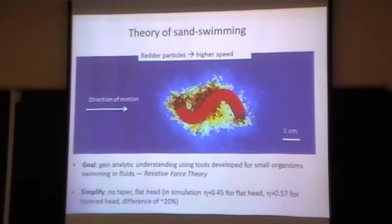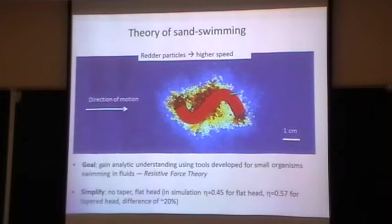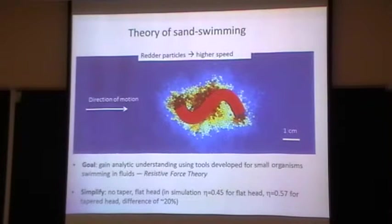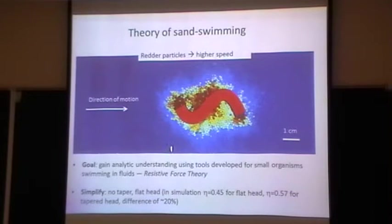Our goal here is to gain analytic understanding using tools developed for small organisms swimming in fluid — called resistive force theory. We're not going to apply it to the complicated tapered shape; we're going to do the physics-friendly thing and simplify the sandfish to a square cross-section. It turns out streamlining in granular material doesn't give you much drag reduction — only about 20% — unlike aerodynamics. By comparison the wave efficiency differs only about 20 to 25% between a blunt-headed and tapered-headed sandfish simulation.